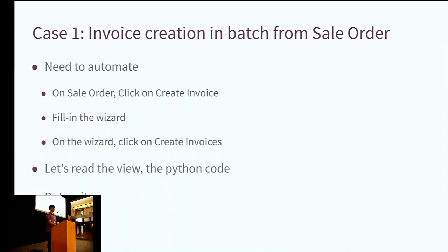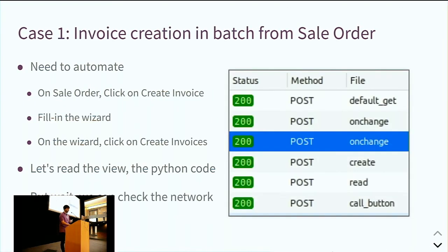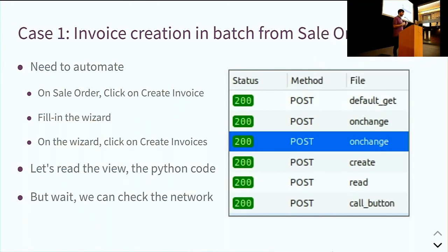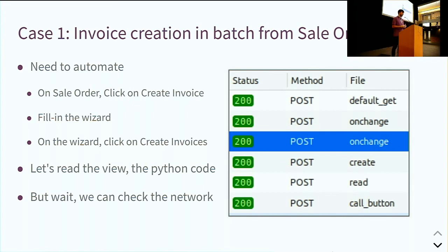And this is what the network is telling us. When the wizard pops up, you first have a default_get. Then you have an onchange triggered by the default_get. Then I fill the form, triggering another onchange. Finally, when I click the button, three operations happen: the creation of the wizard, the web client reads the information again, and then it calls the button method. So you can see there are a lot of requests, but we know exactly in which order we have to call them.